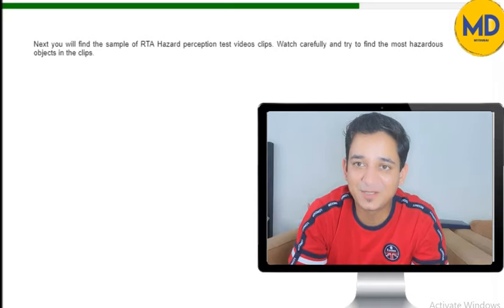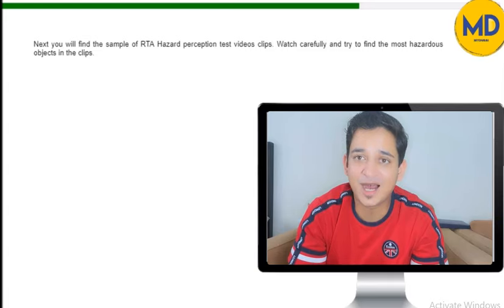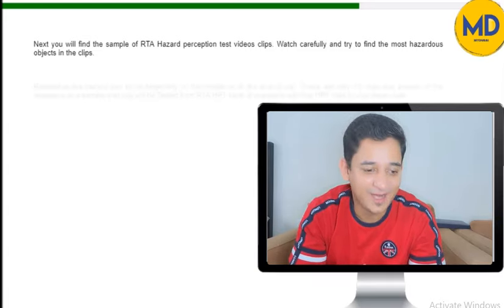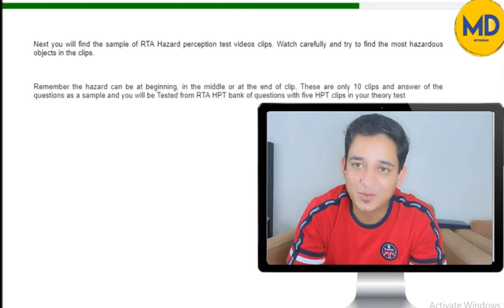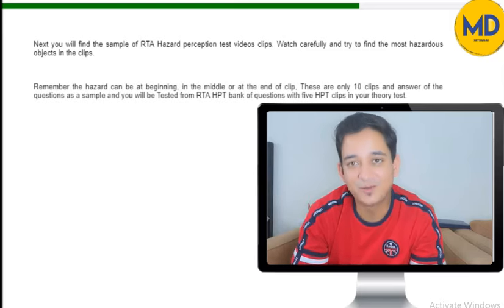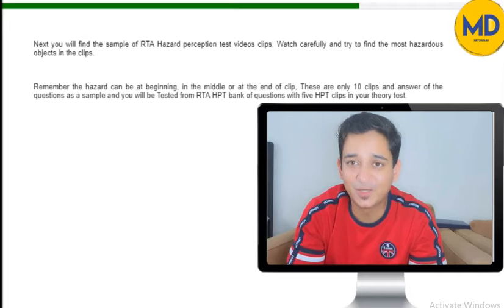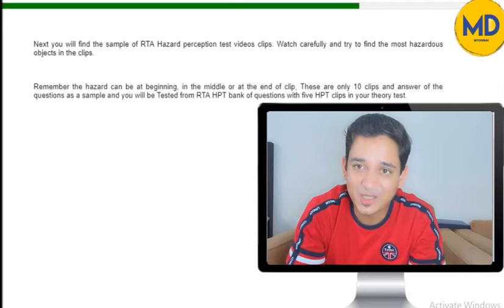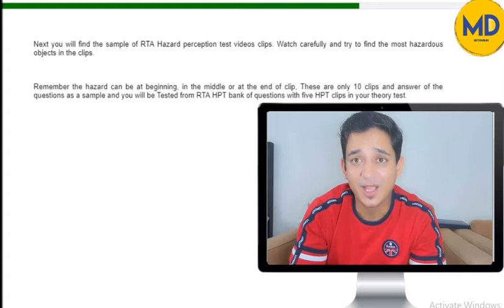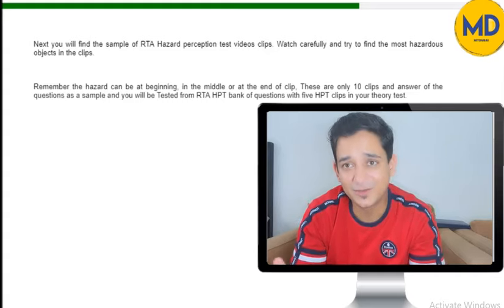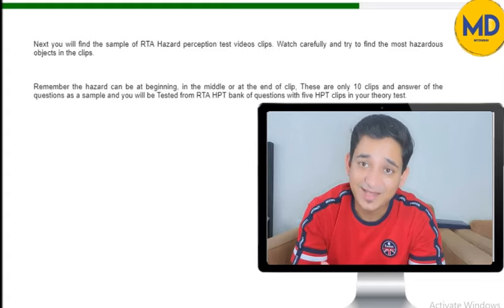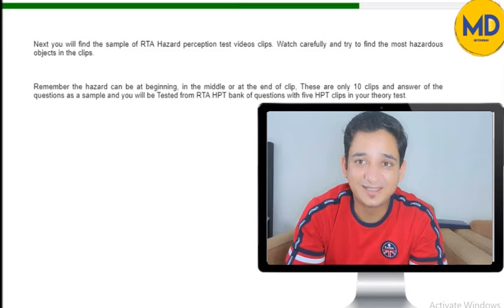Hi friends, my name is Pankas and in today's video we're going to talk about Hazard Perception clips which come in your RTA Theory Test. In the RTA Theory Test, you get five video-based questions which you have to watch and answer within 10 seconds. You need to look for the hazard in the video, which could be in the beginning, middle, or end. You get three options to answer within 10 seconds.